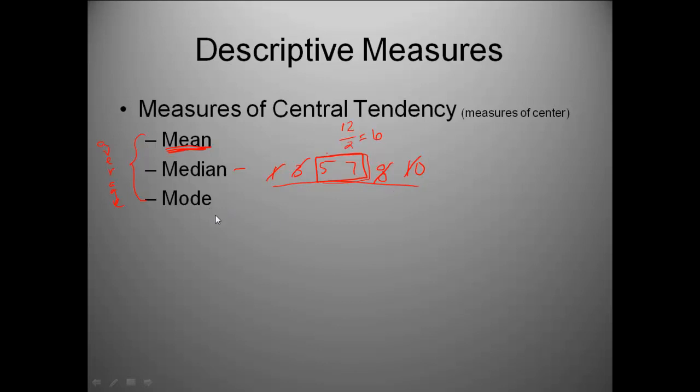And then our last one here, the mode. The mode is the number that occurs most frequently. So whatever number is repeated the most is the mode. There can be multiple modes. So if you have a couple of numbers that each happen 5 times, you can have multiple modes. Or if nothing is repeated, then you could have no mode.